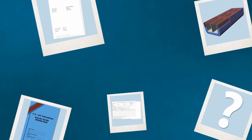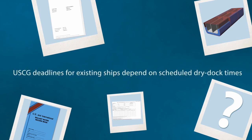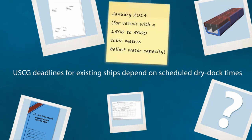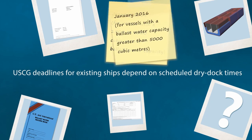The rules for when an existing vessel must have a ballast water treatment system have been subject to change and differ between the USCG requirements and the IMO. The current USCG requirements are that existing vessels must be fitted with an approved ballast water treatment system at their first scheduled dry docking after either January 2014 for vessels with 1,500 to 5,000 cubic meters ballast water capacity, or January 2016 for vessels with a ballast water capacity greater than 5,000 cubic meters.